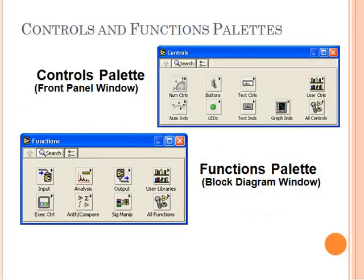For the front panel window, we have different control palettes. If you want to add a boolean button, we have the boolean palette. We can get numerical controls. We can add boolean indicators as LEDs. We can add numeric indicators as indication needles. We can have graph indicators and so on. You can also add text controls. In the block diagram, we get the function palette from where we can add analysis functions, arithmetic or comparison functions, and so on. Function palette is in the block diagram; control palette is in the front panel window.